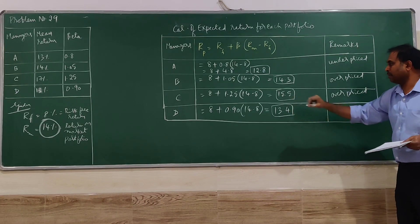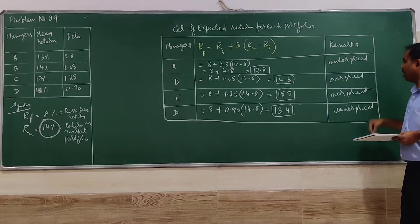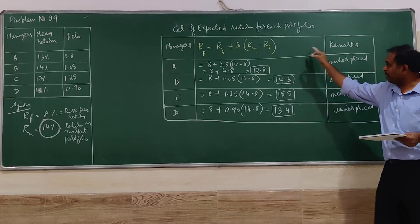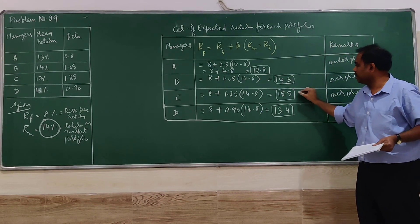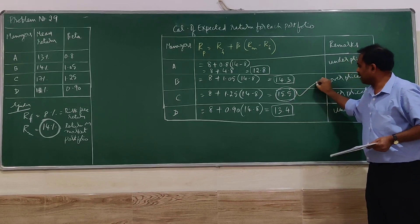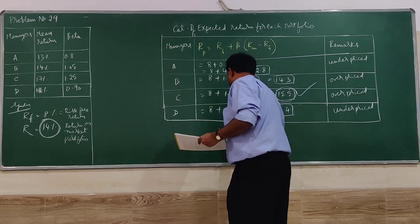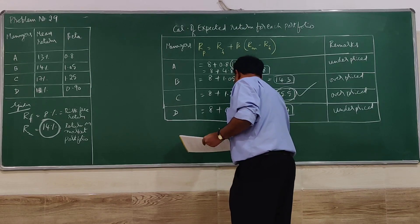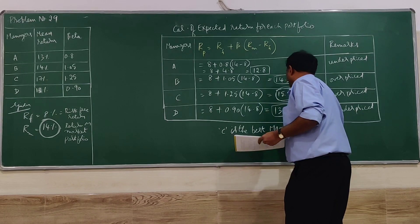D is less than the market at 14%, underpriced. The best one out of all this is 15.5. That is going to be the one to be selected. So C is the best manager.